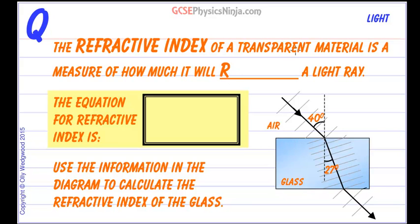The refractive index of a transparent material is a measure of how much it will refract a light ray.